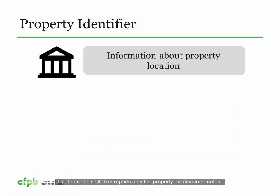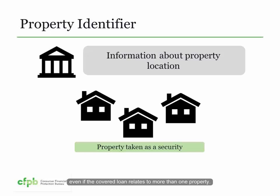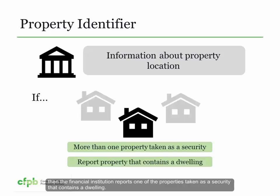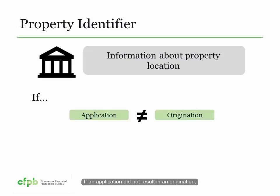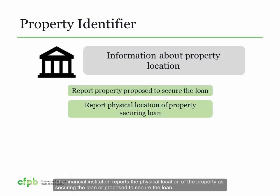Section 1003.4(a)(9) requires that the financial institution report information about property location for the property securing the covered loan, or proposed to secure the covered loan in the case of an application. The property address must be reported. If the property is located in a metropolitan statistical area or metropolitan division in which a financial institution has a home or branch office, or if the institution is subject to the Community Reinvestment Act, the financial institution must also report the state, county, and census tract.